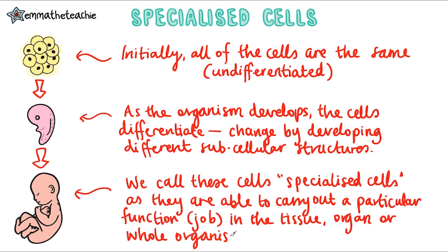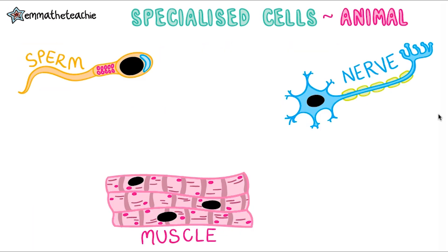This will be in the tissue, organ, or whole organism in which they are found. We're going to look at three specialized animal cells. You need to be able to explain how the structure of a cell relates to its function, so we'll cover this for each cell. And you can expect to be given some information to use for these types of questions.